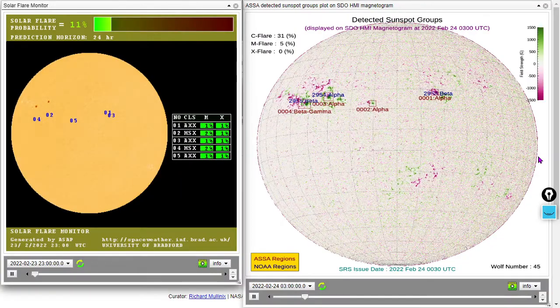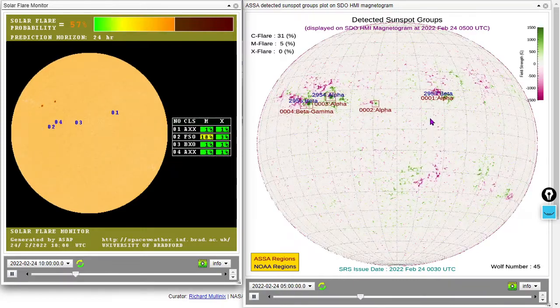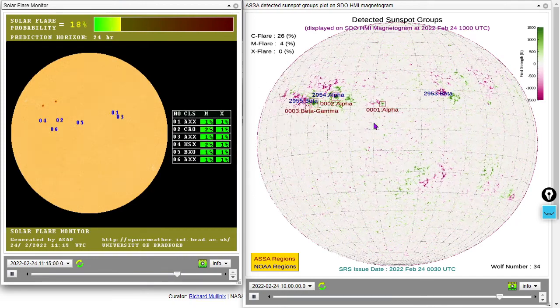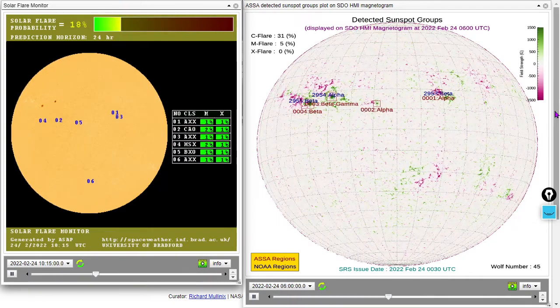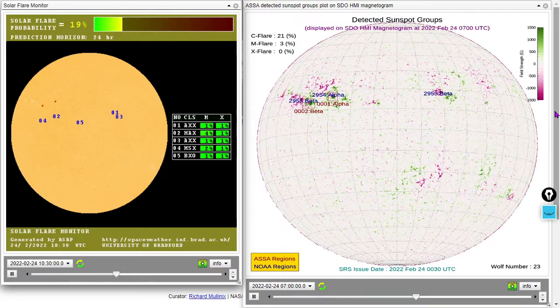Next, we'll move on to sunspots. We've got the same sunspots as yesterday. 2953 has been degrading, 2954 has remained stable, and 2955 is the most likely spot to see additional solar flares. It's beta class, meaning it has both polarity fields associated with its umbral growth.